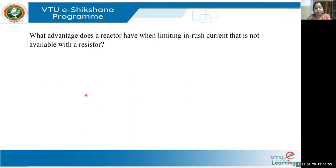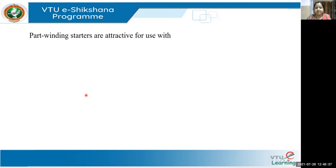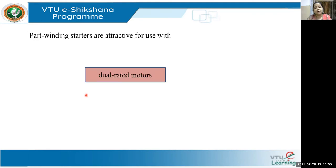Question 3: What advantage does a reactor have when limiting inrush current that is not available with a resistor? The answer is the rise time of current. In a resistor starter, current rises instantaneously, whereas in a reactor starter, the current rises at an exponential rate. Question 4: Part winding starters are attractive for use with dual rated motors — these are motors with two ratings, also called dual rated motors.